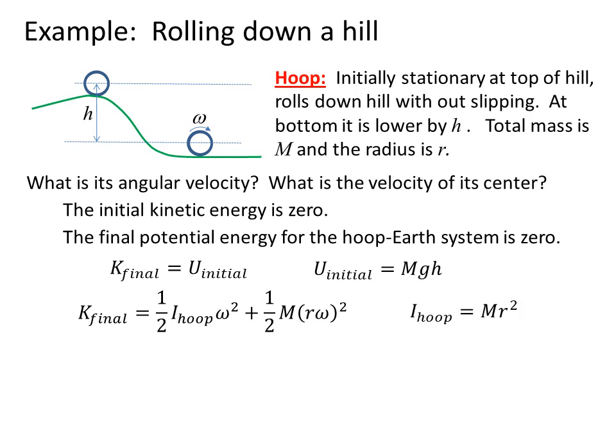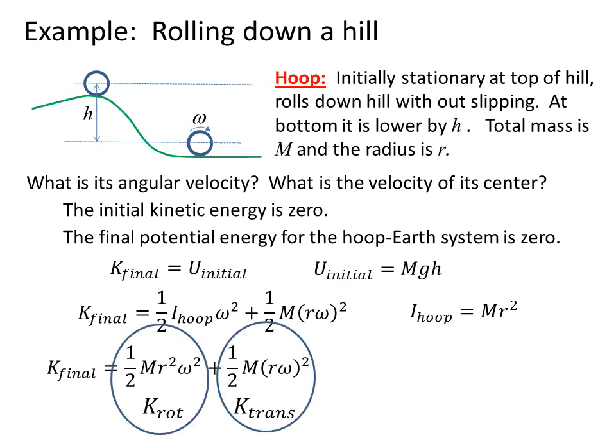We use I_hoop equals the mass of the hoop times r squared. Then we can set this K_final where we have the two parts, one rotational and one translational, equal to Mgh. So we've now used K_final equals U_initial.